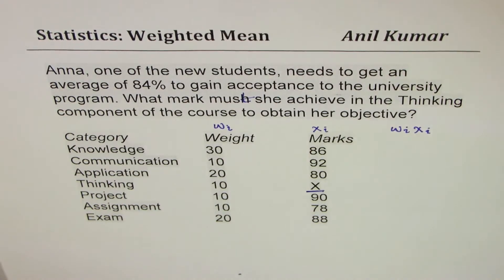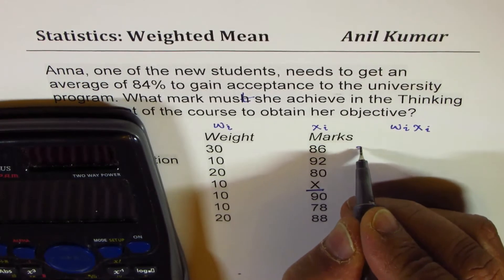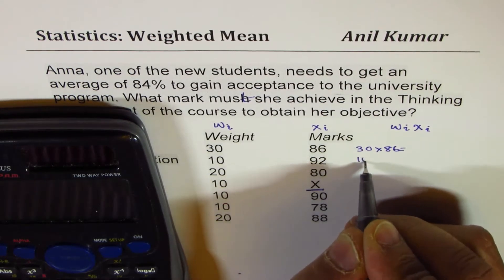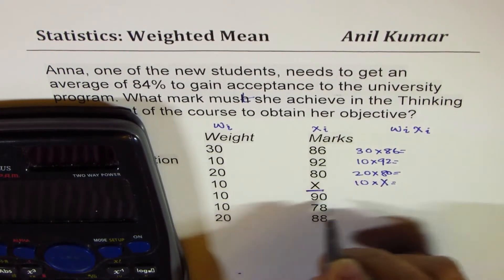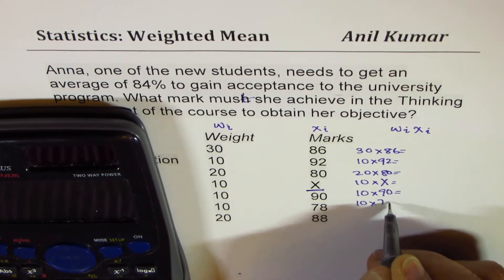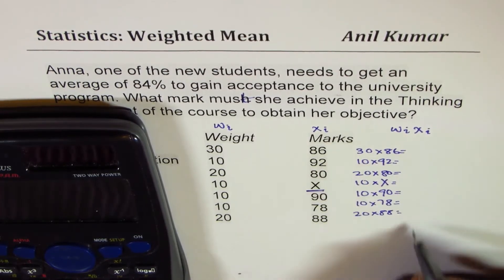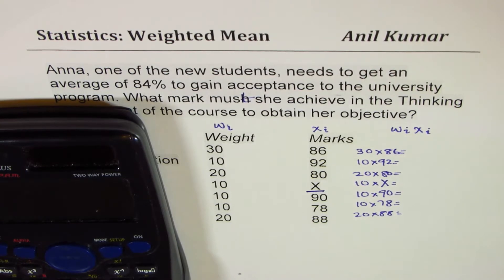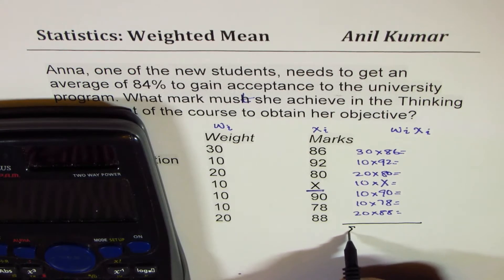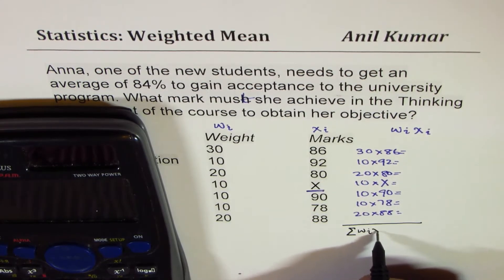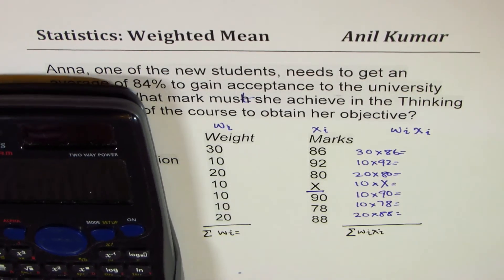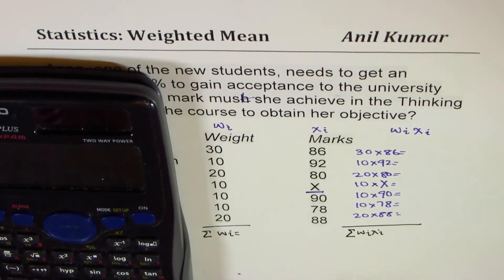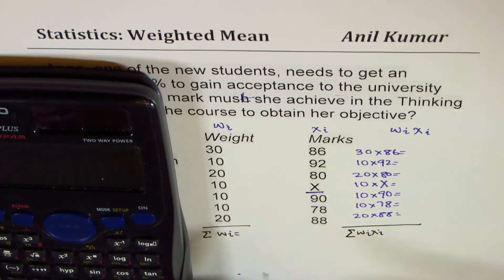So the product of these two — we'll use the calculator to find these values. For example, I'll write down 30 times 86, then 10 times 92, 20 times 80, 10 times x, 10 times 90, 10 times 78, and 20 times 88. Once we write these values, we'll add them up as sigma wi·xi. We can also find the sum of weights: 30 plus 10 plus 20 plus 10 plus 10 plus 10 plus 20, which gives us 110.